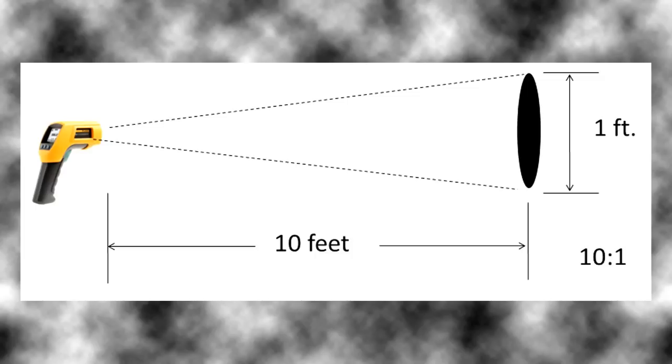For example, if we had a device with a 10 to 1 distance to spot size ratio and we were 10 feet from the target, we would take 10 feet divided by the 10 to 1 ratio, which gives us a 1 foot diameter circle.